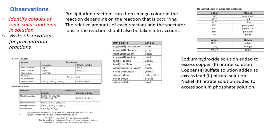Precipitation reactions can then change color depending on the reaction that is occurring. The relative amounts of each reactant and the spectator ions in the reaction should also be taken into account, as well as the precipitate itself. So let's have a look at what we've got.